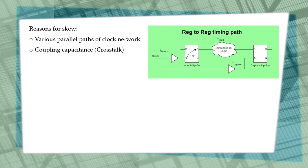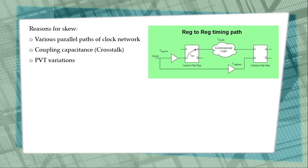A third reason is process, voltage, and temperature (PVT) variations. Due to process variation, one wire may be manufactured thinner than another. Voltage variations and temperature variations also contribute to on-chip differences. Due to all these factors, we will have problems related to clock skew.